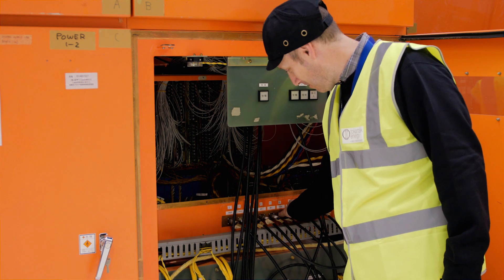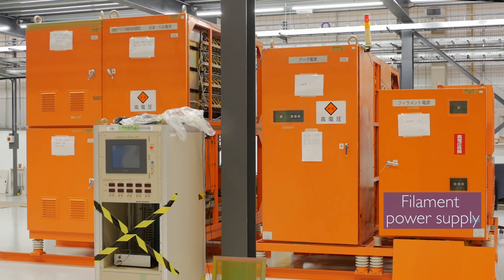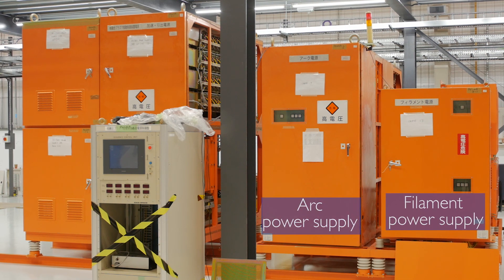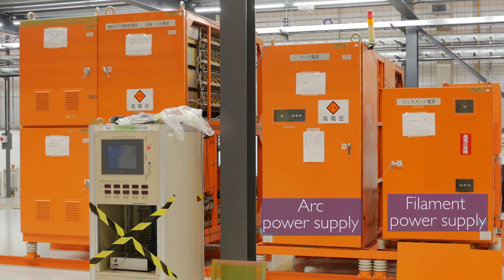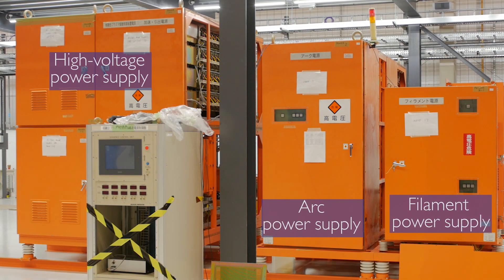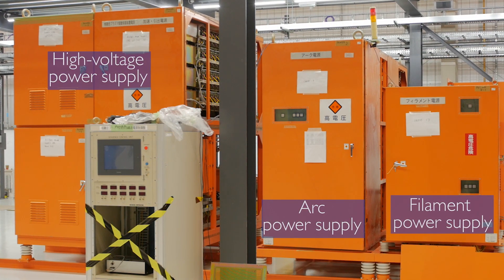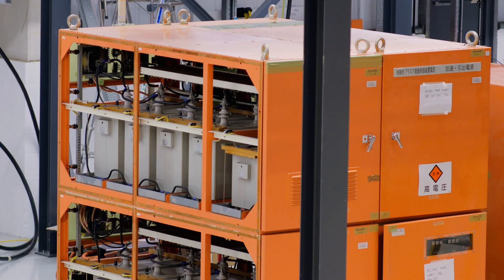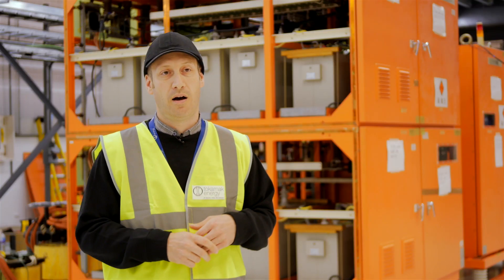We have three main power supplies. In the far distance we have a filament power supply which is thousands of amps of current. We have an arc power supply which is hundreds of volts and hundreds of amps of arc current to establish plasma. And we have a high voltage power supply which is in the order of 30 to 100 kilovolts high current which is there to generate high voltage to accelerate the ions.